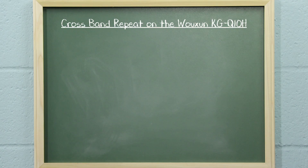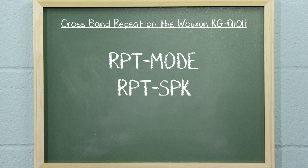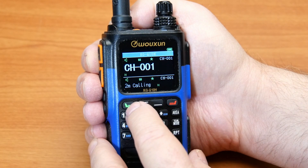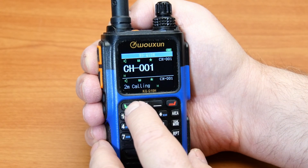There are three options in the system menu related to configuring the crossband repeat function: RPT mode, RPT SPK, and RPT PTT.